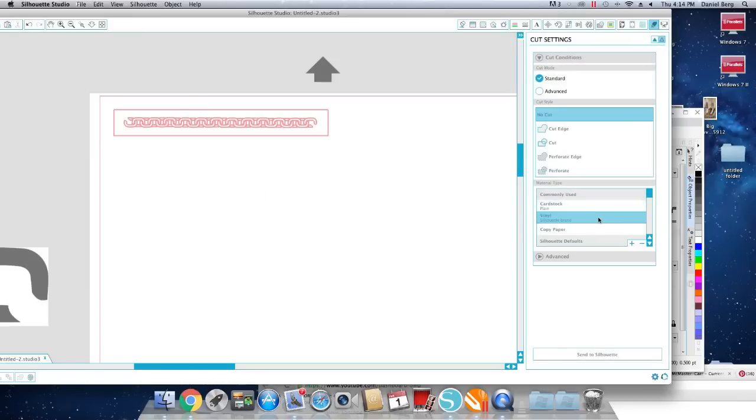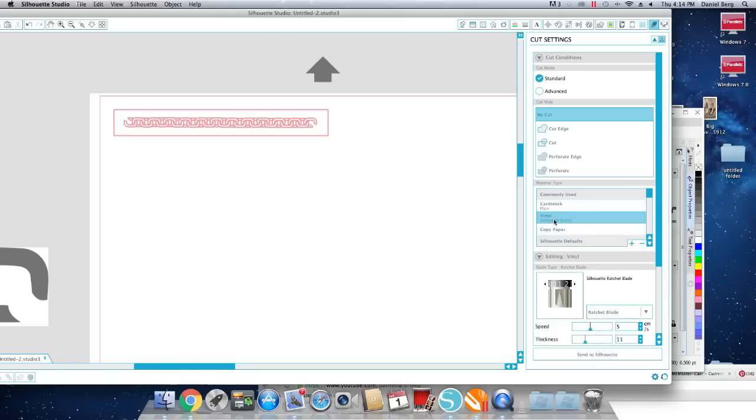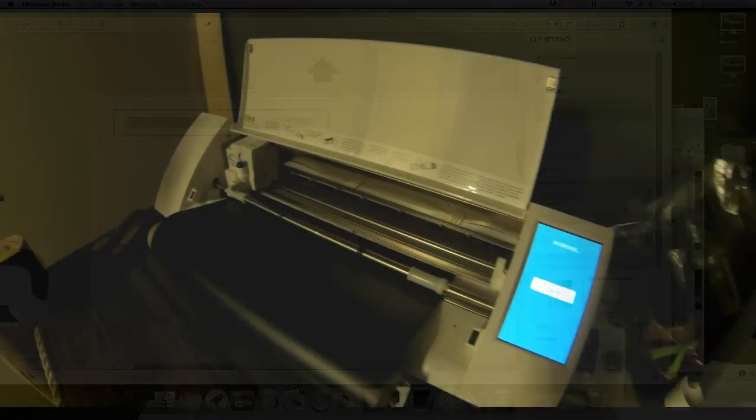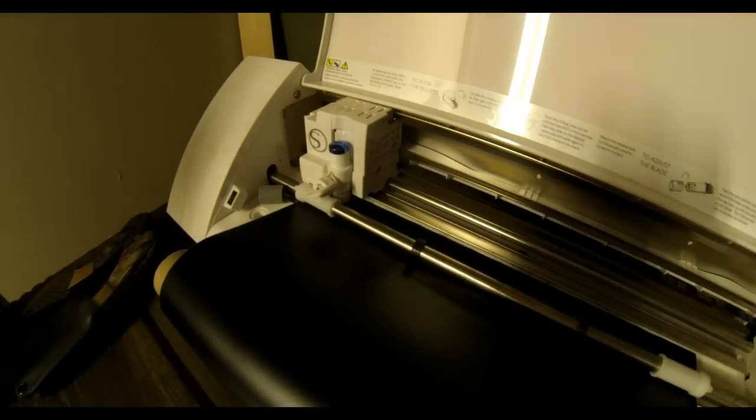And then all I do is pick the material. I'm going to pick vinyl. I usually set the knife depth at 2. And then I can send it to the printer or send it to the Cameo machine itself, the vinyl cutting machine.